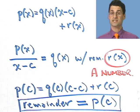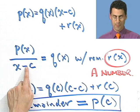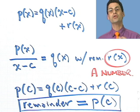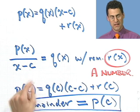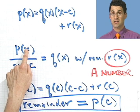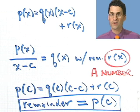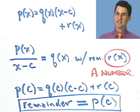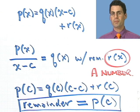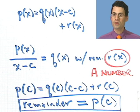So to sum up: if I have a polynomial p of x and I'm dividing it by x minus c, the remainder will just be the value of the polynomial when evaluated at x equals c. And this actually has a name — it's such an important result. It's called the remainder theorem. The remainder theorem states that if you have a polynomial p of x, when it's divided by x minus c, its remainder will always be p evaluated at c.